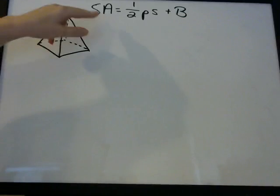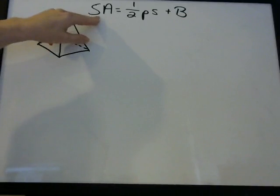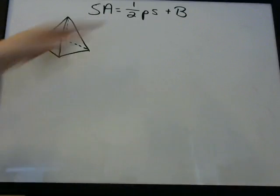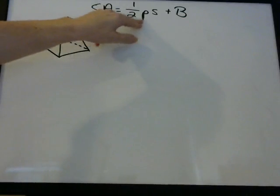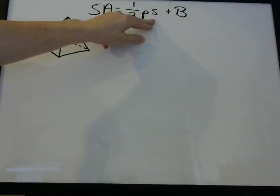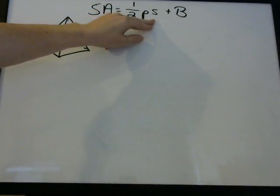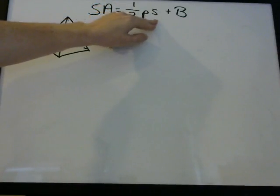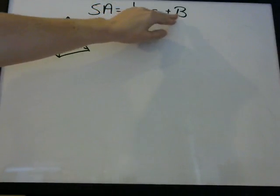Here's the formula: Surface area, SA, equals one-half PS. When letters are right beside each other that means multiplication, so it's one-half times P times S plus B.